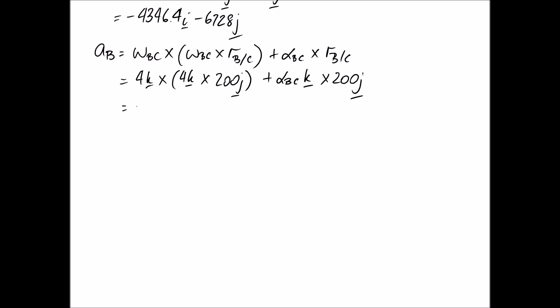So expanding this one out, remember you want to do the bracketed part first. So this here becomes negative 800I. And this on the end becomes negative 200 alpha BC I. So one last step that we can take to simplify.